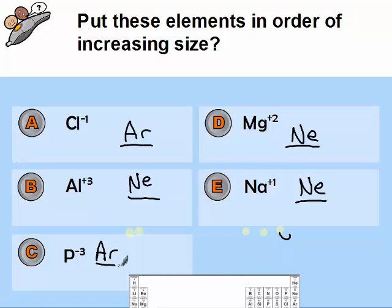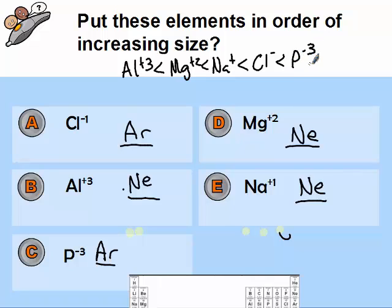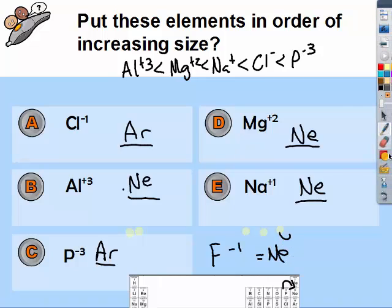So if I want increasing, first I want the smallest ones. I look at neon and argon. Neon is smaller. And now I can look at my isoelectronic and say the most positive is the smallest, so aluminum plus three. Now I'm going to look at my argon ones, chlorine minus one and P minus three. Had there been a fluorine minus one in there, fluorine minus one has the same number of electrons as neon, and so that would actually fit in right here.